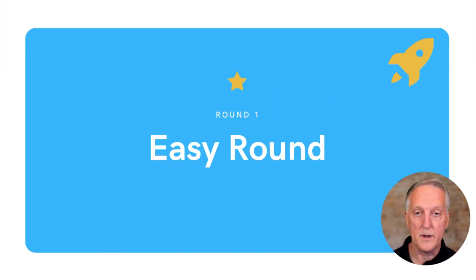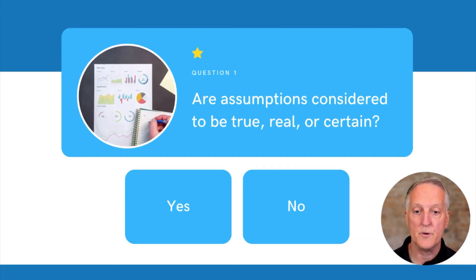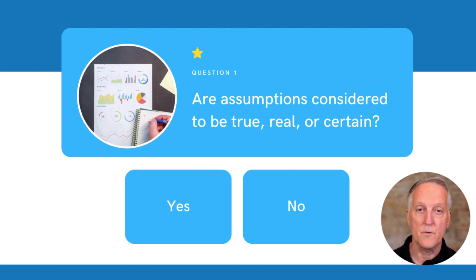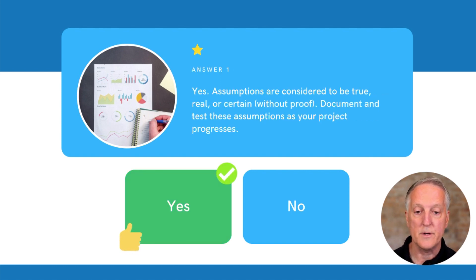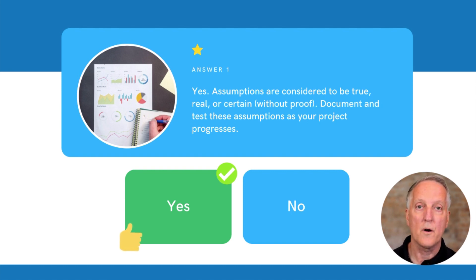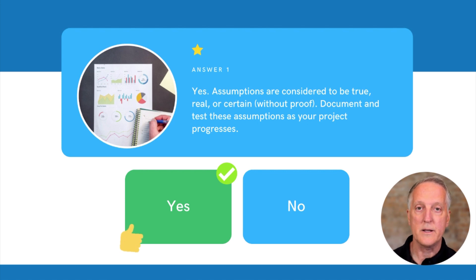We'll start with an easy question. First question: are assumptions considered to be true, real, or certain? The answer is yes — they are considered to be true, real, or certain, even without proof or demonstration. And this is why it's so important that project managers document their assumptions and test them periodically through the project.